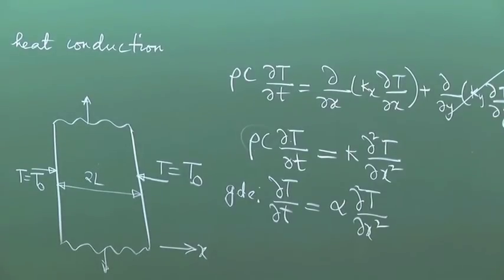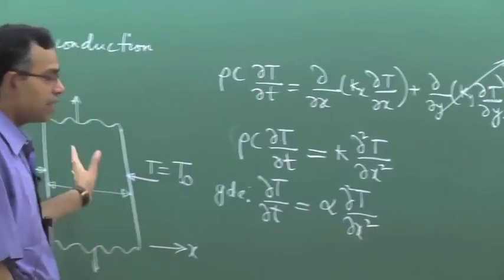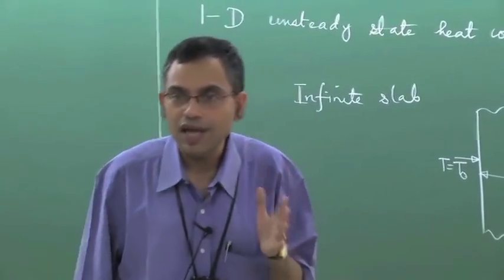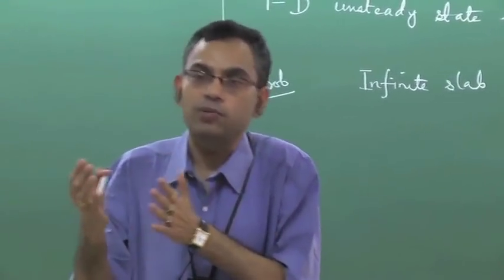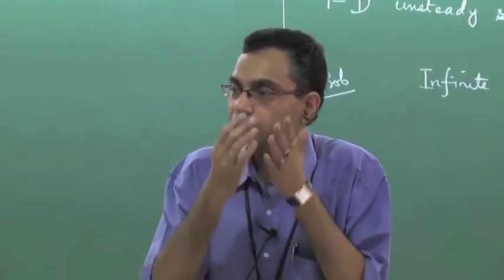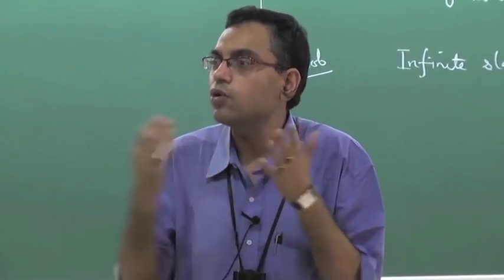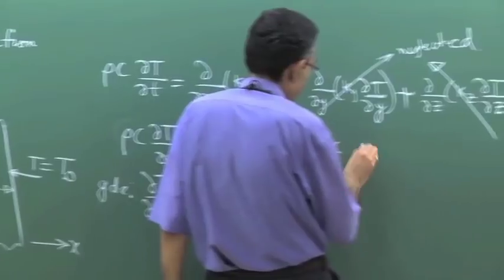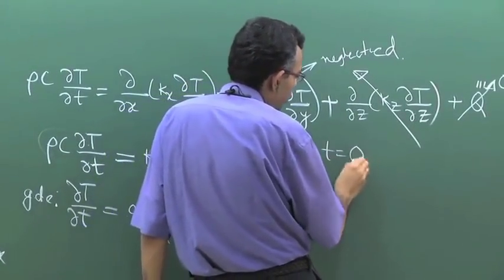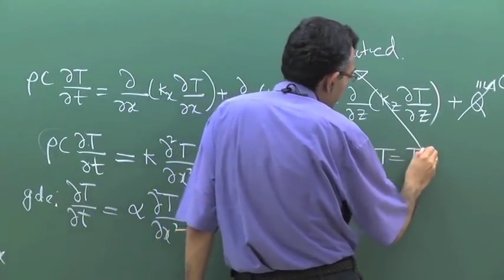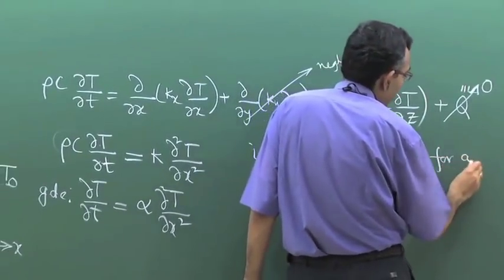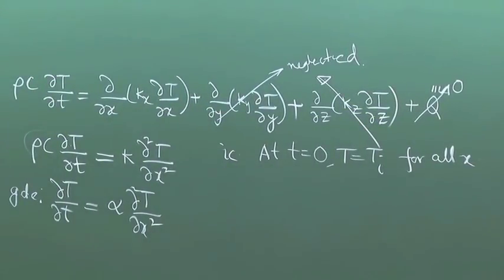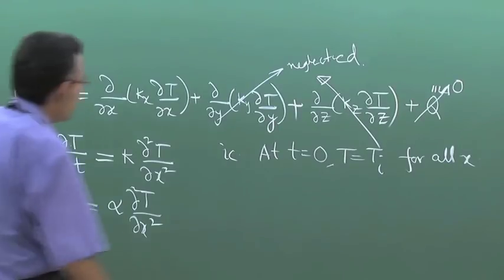This is a time-dependent problem, so these kinds of problems in the theory of differential equations are called initial boundary value problems. You require initial conditions to specify what is the situation at time equal to zero. So the initial condition is: at t equal to 0, temperature equals Ti for all x — this is the initial temperature. And we also have boundary conditions.